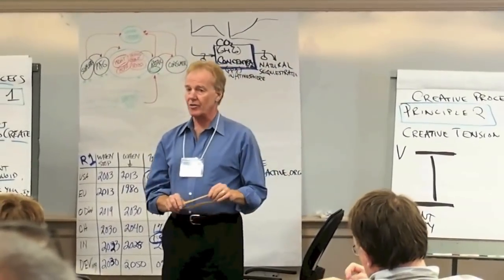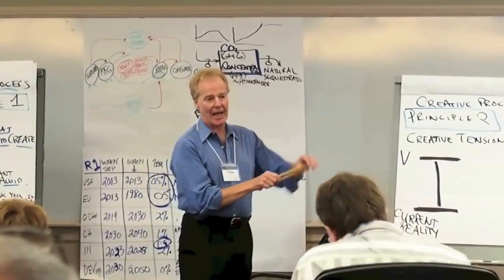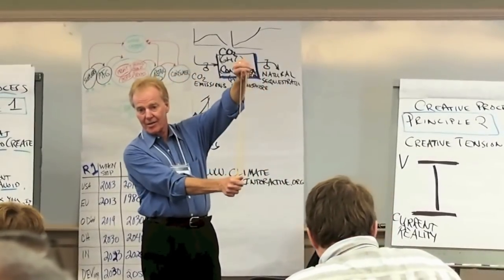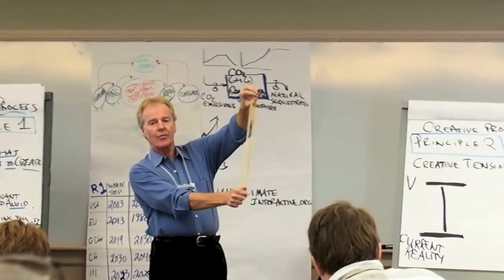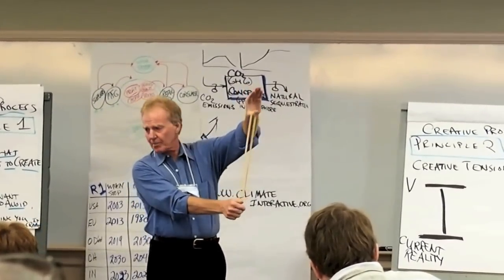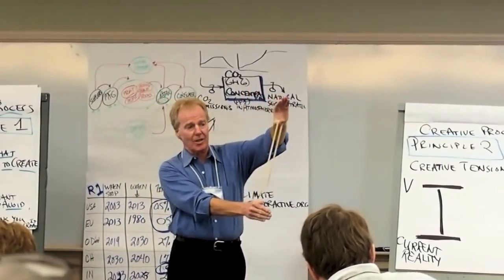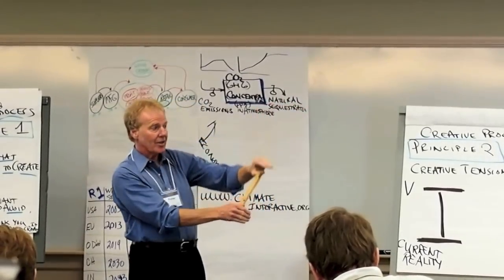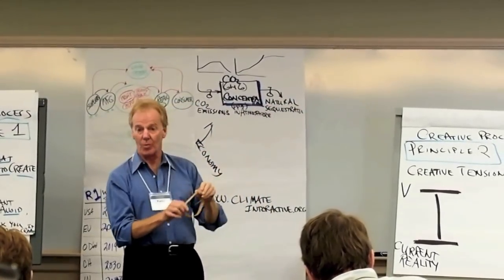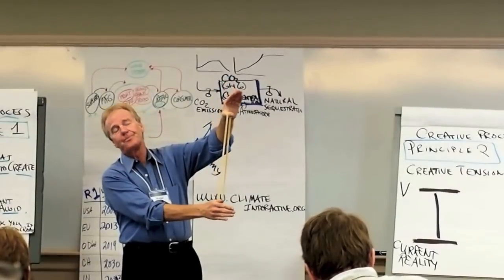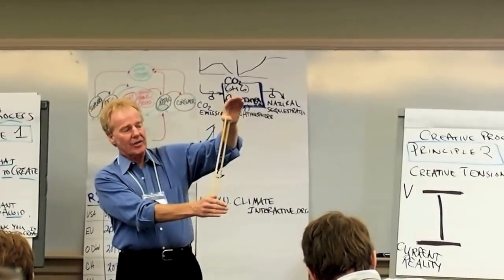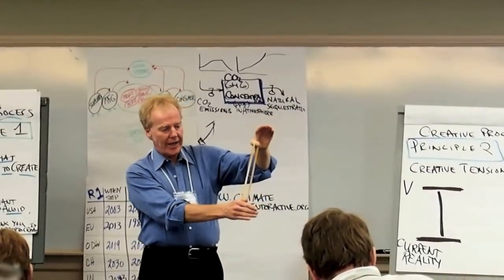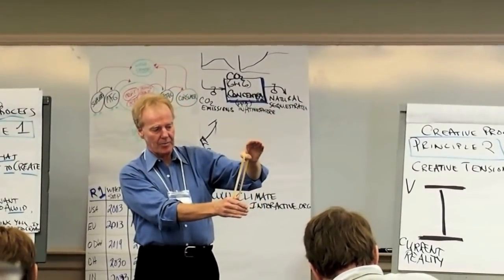So the whole point of creative tension is, yeah, do you need analysis? Absolutely. Do you need vision? Absolutely. But what you really need is both. Now there's a variety of kind of subtleties to the principle. You get the basic idea? It's really simple. Again, Fritz's genius is he takes that and makes it really simple, really clear. But there are subtleties. One subtlety is that the energy in the creative process comes from this gap.